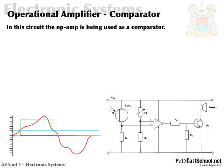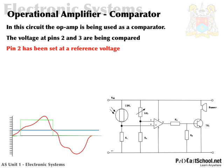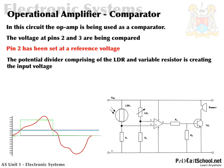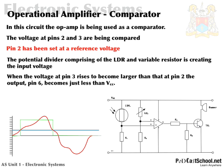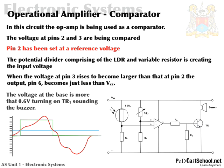In this circuit, the op-amp is being used as a comparator. The voltage at pins 2 and 3 are being compared. Pin 2 has been set as a reference voltage. The potential divider comprising the LDR and variable resistor is creating the input voltage. When the voltage at pin 3 rises to become larger than that at pin 2, the output — pin 6 — becomes just less than VCC, because the difference has been multiplied by that huge gain A. The largest voltage available in this circuit is the supply voltage VCC. The voltage at the base is more than 0.6 volts, turning on the transistor and sounding the buzzer.